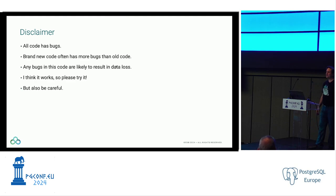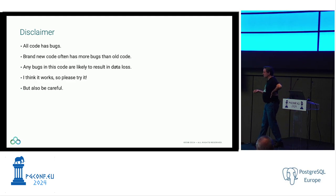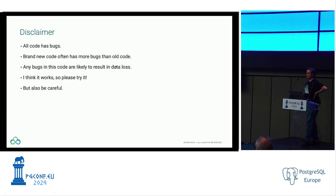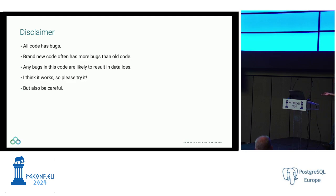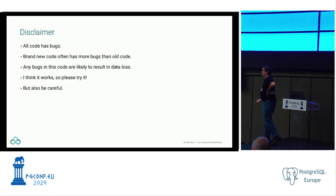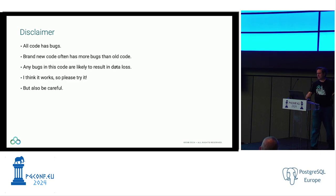I feel obliged to put a disclaimer here: this is a scary feature. Any feature involving backups has the potential to corrupt your data, and this feature probably has bugs because pretty much all code has bugs. If there's a bug in something like parallel query, the worst thing is you might get the wrong answer. But here we might actually permanently lose your data, which would be really sad. Please do try it out because I think it works, but please be careful and don't assume I never make mistakes.